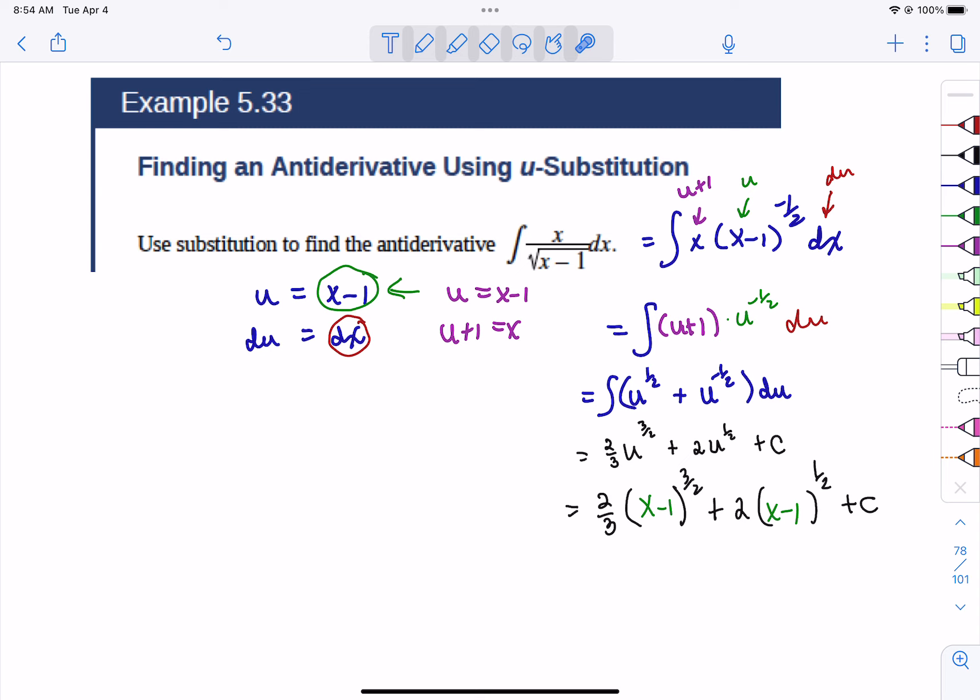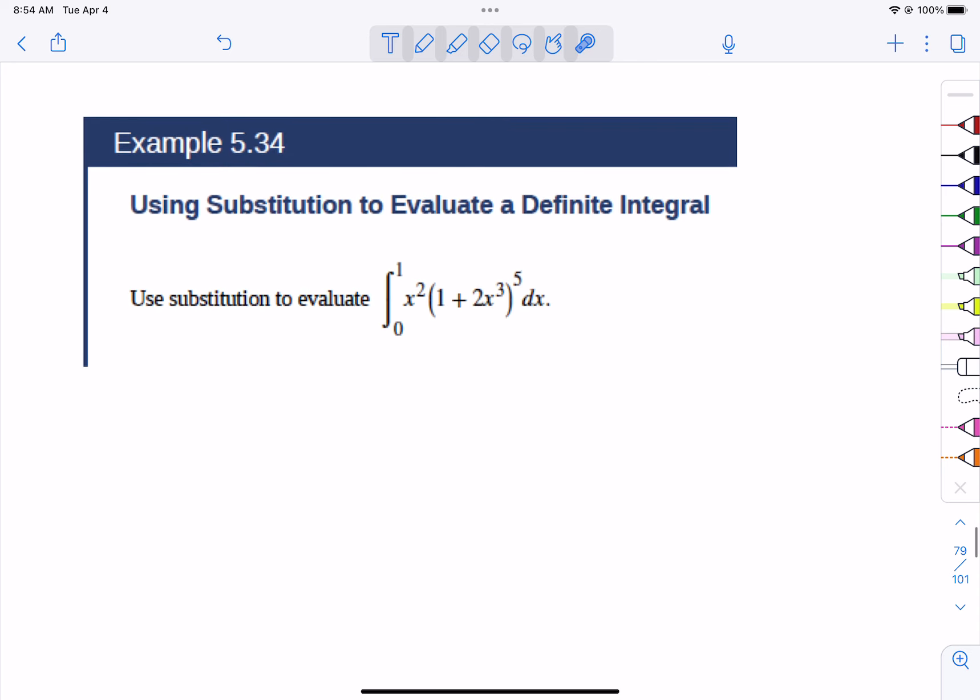5.34. These techniques are really the most difficult algebraic things that we have seen so far. Because we have to think about what was the hardest derivatives we did. Chain rules. So what is going to be the most difficult type of integration we're going to do? The opposite of a chain rule, u substitution.